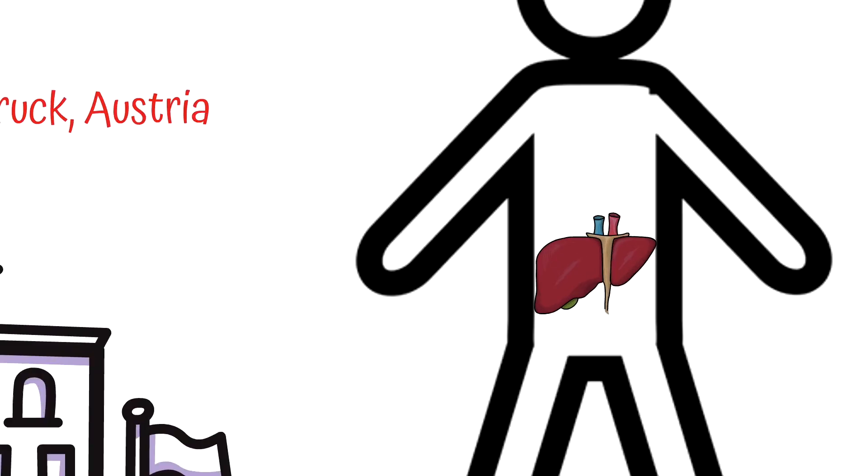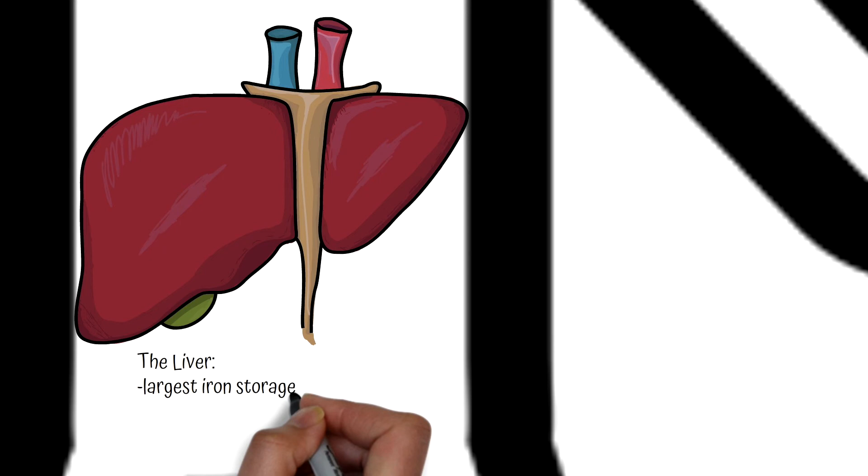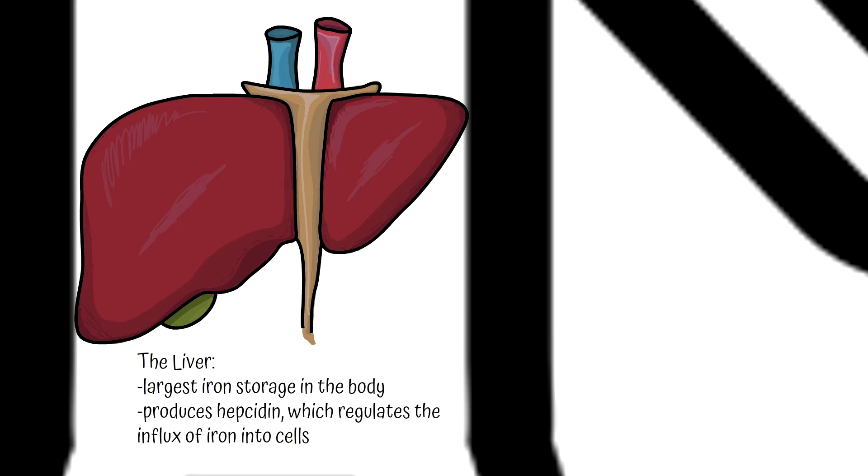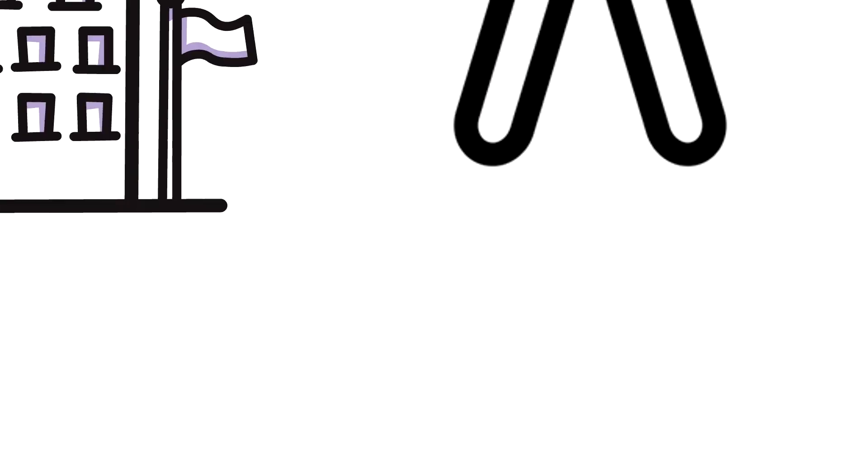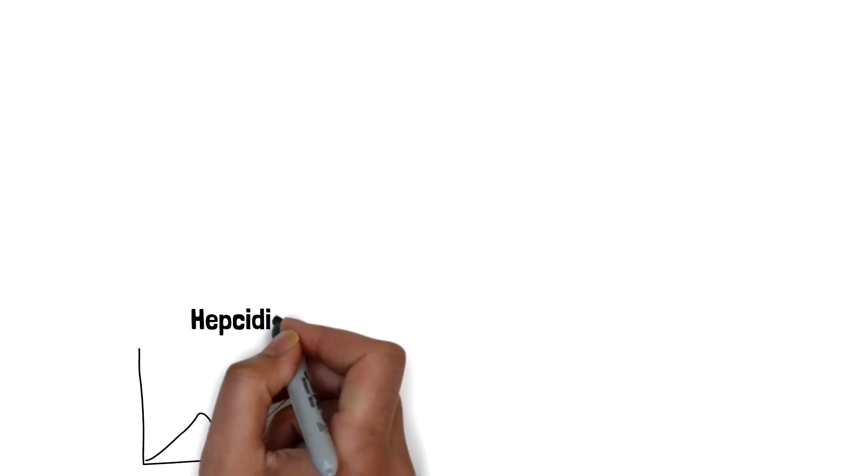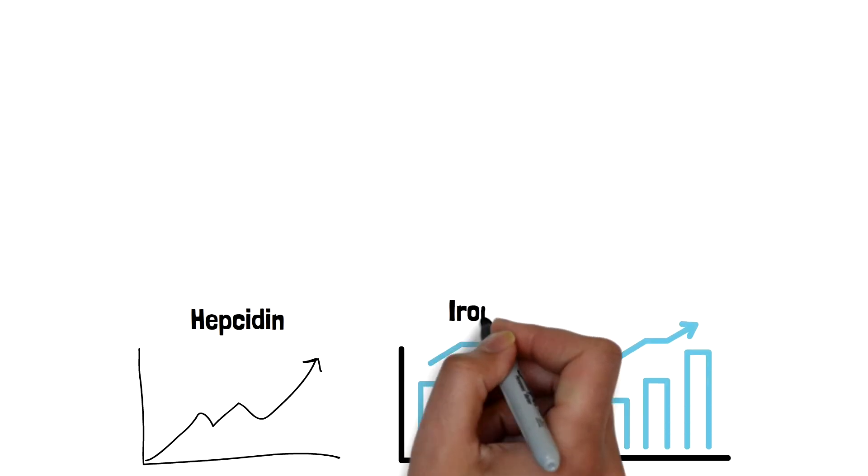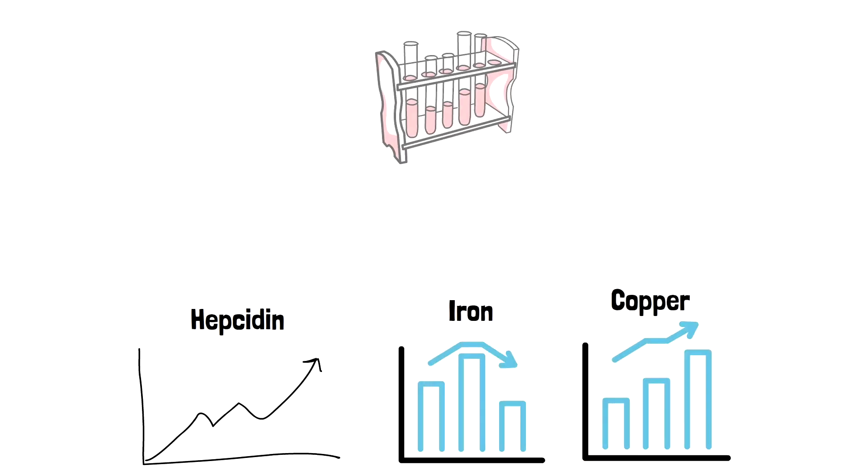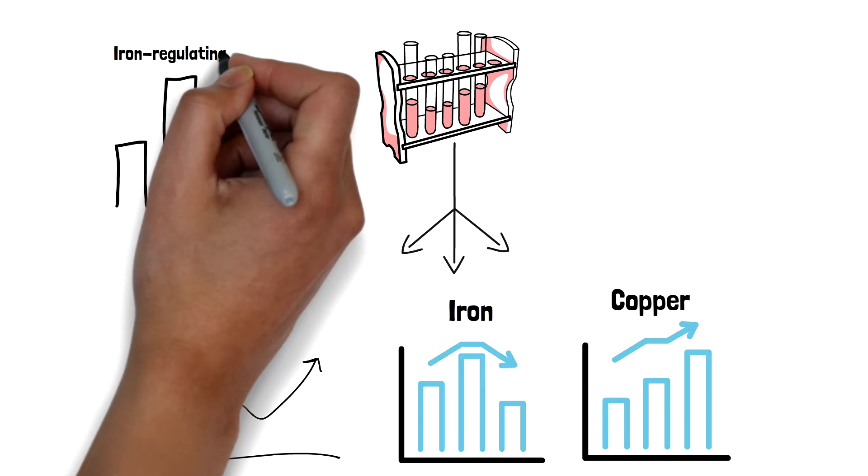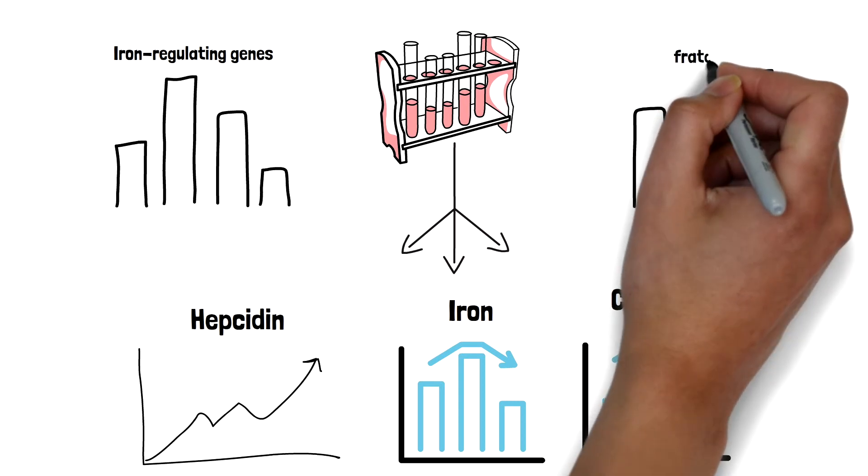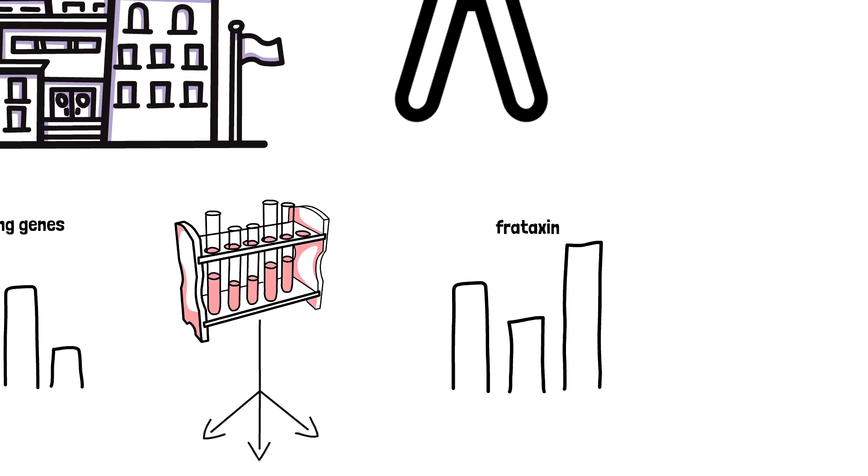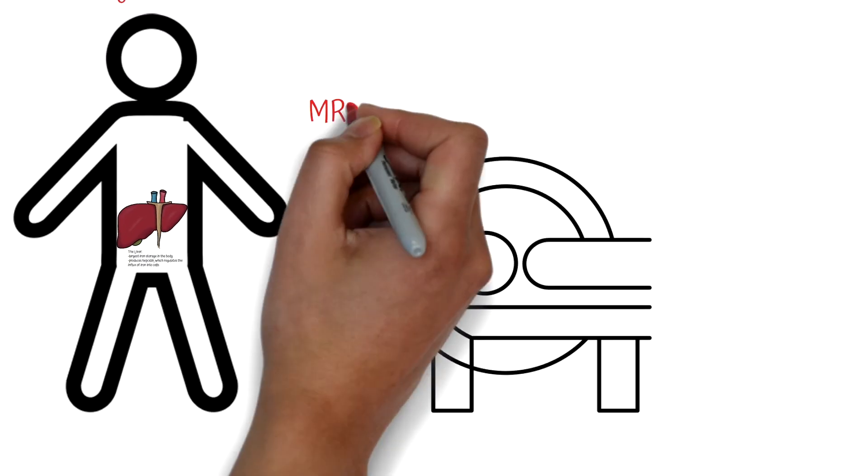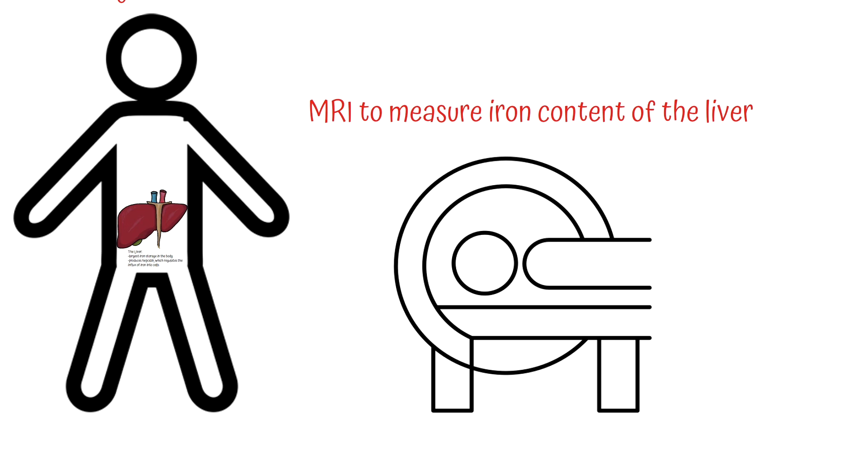The liver has the largest iron storage of the body and it is the liver that produces the hormone hepcidin, which regulates the influx of iron into cells. In a study funded by FARA, Dr. Indelicato and her team are measuring hepcidin levels as well as iron and copper in the blood of FA patients. In addition, they will also measure several iron-regulating genes and frataxin in the blood-derived white cells. Using MRI, the iron content in the liver of FA patients is also being measured.